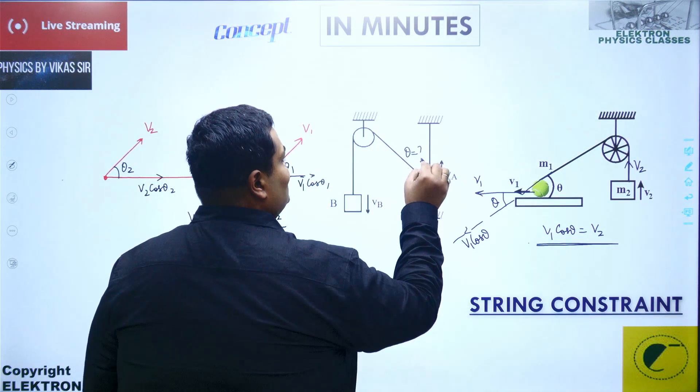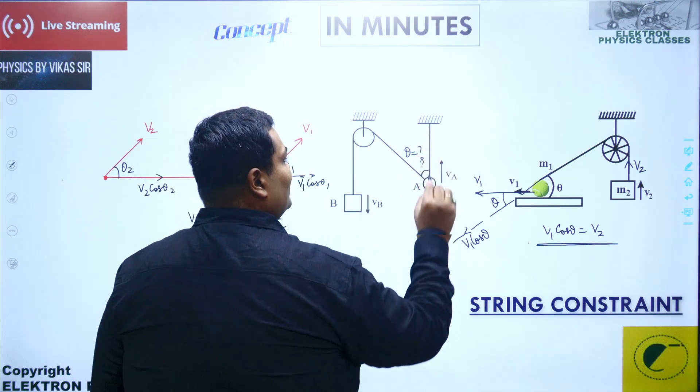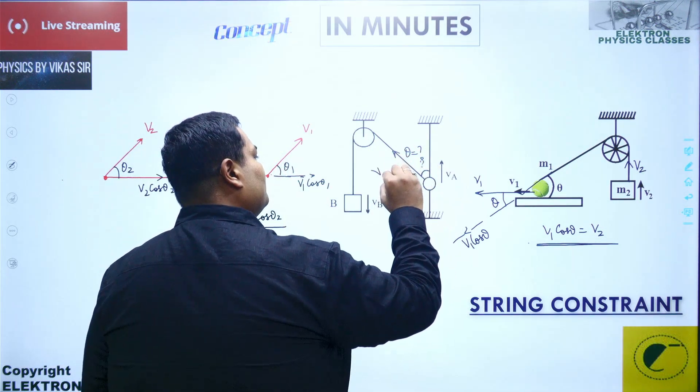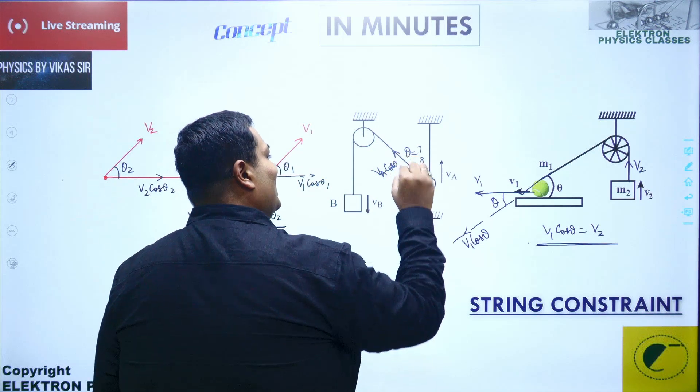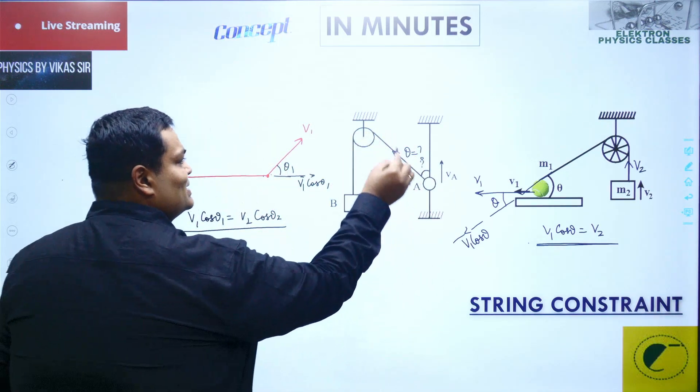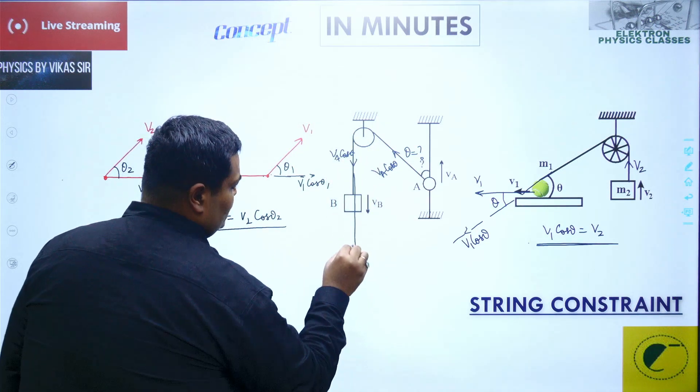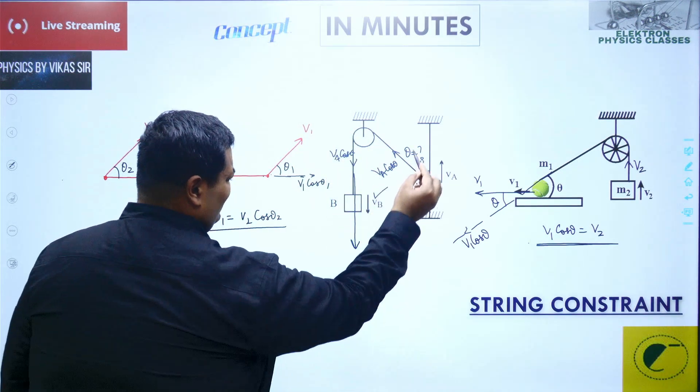So that's perfectly exactly the same. This point is moving up with the velocity v8. Take the component along the string, that becomes v8 cos theta. And if you see this, this is along the string, so that is v8 cos theta, and it should be equal to the velocity of this block down. It is given as vb.